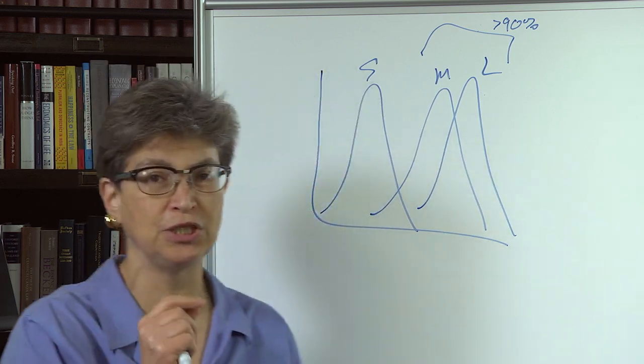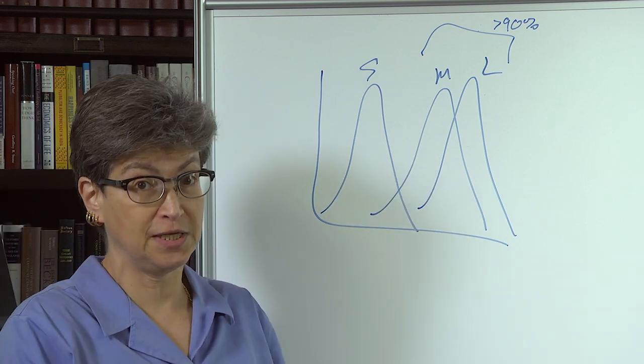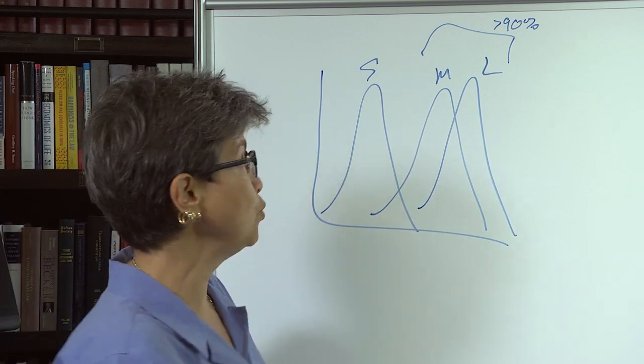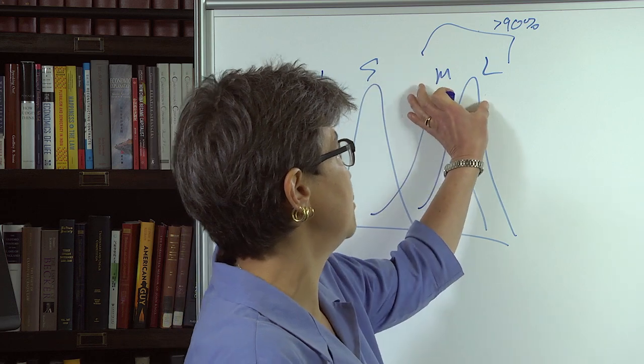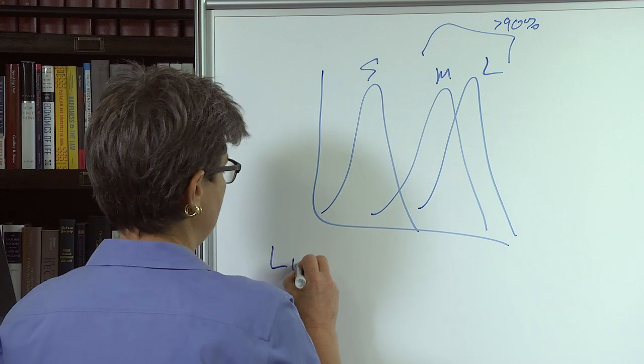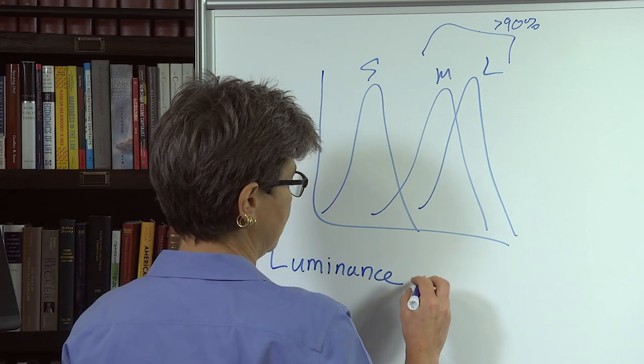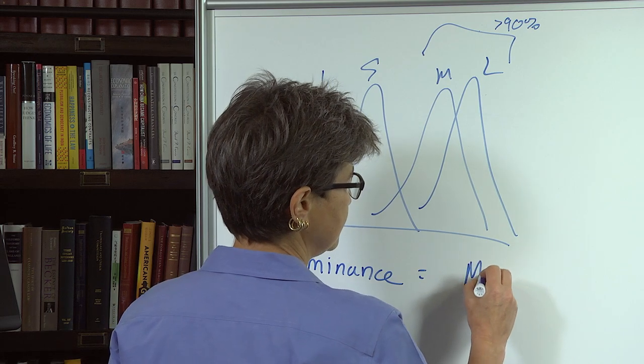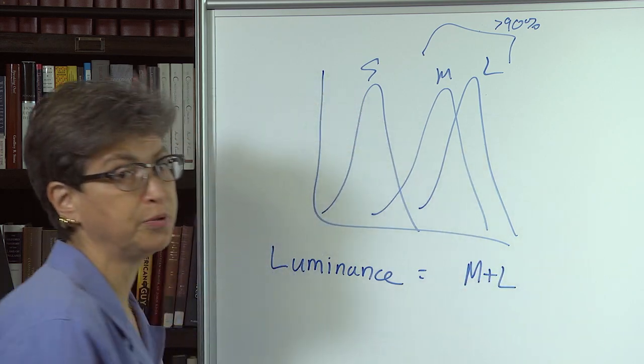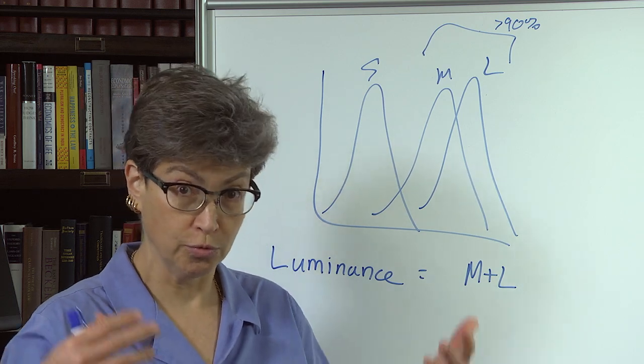So if you want to figure out how much light is there in the scene, what's the luminance of the scene, what do you want to know? You want to know how much energy is in this realm. And so we have a channel that we think of as a luminance channel, which is the sum of the M plus L cone responses.